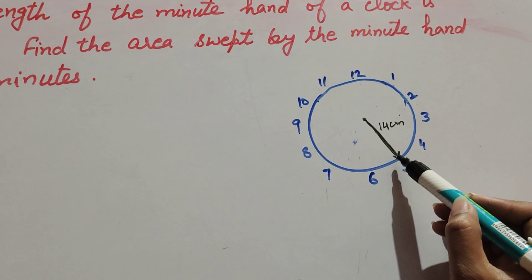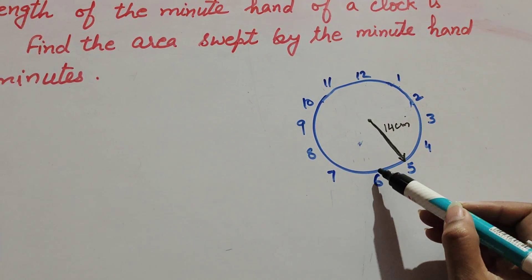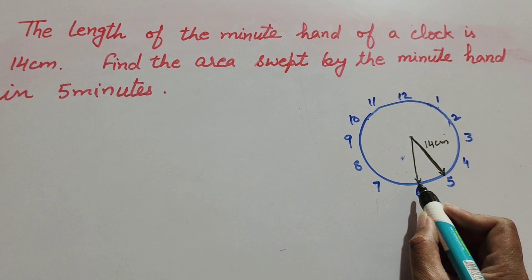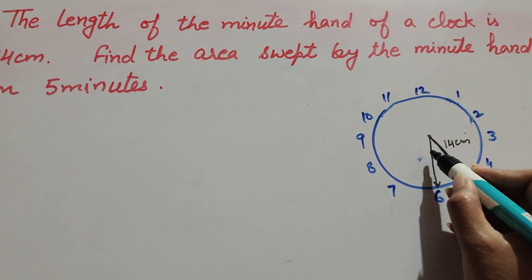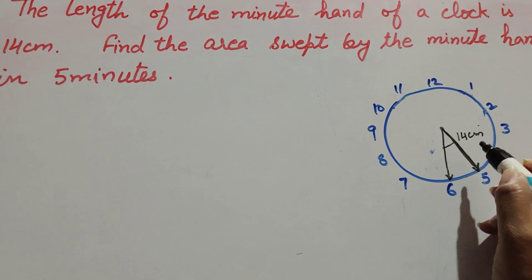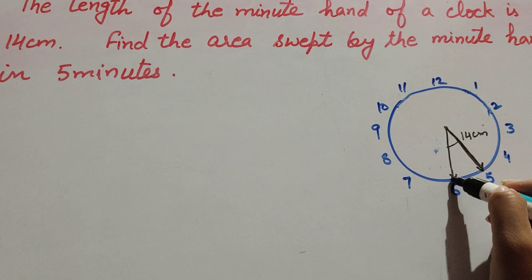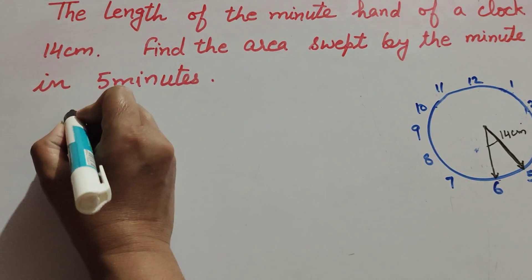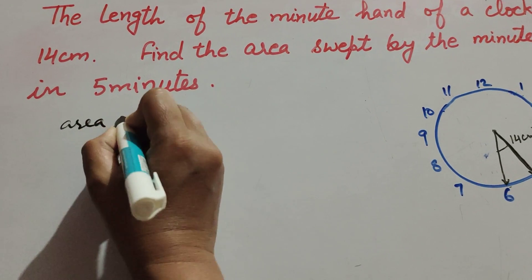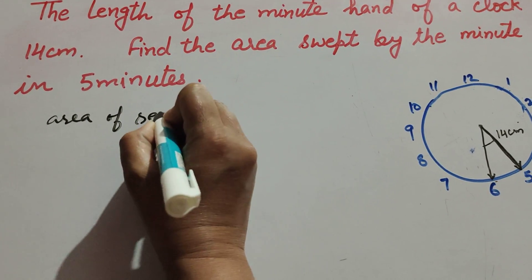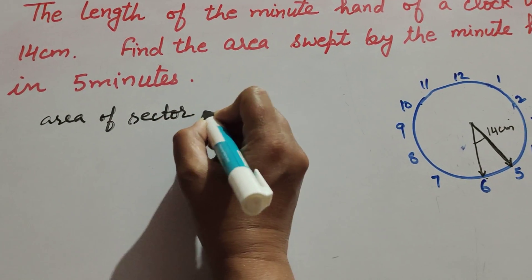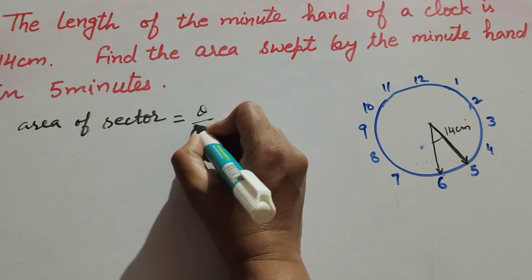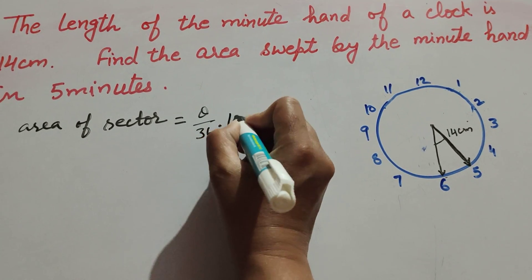Suppose the minute hand is at five; after five minutes it is at six. So we find the area covered by the minute hand between five and six. It forms a sector, so we use the area of a sector of a circle.